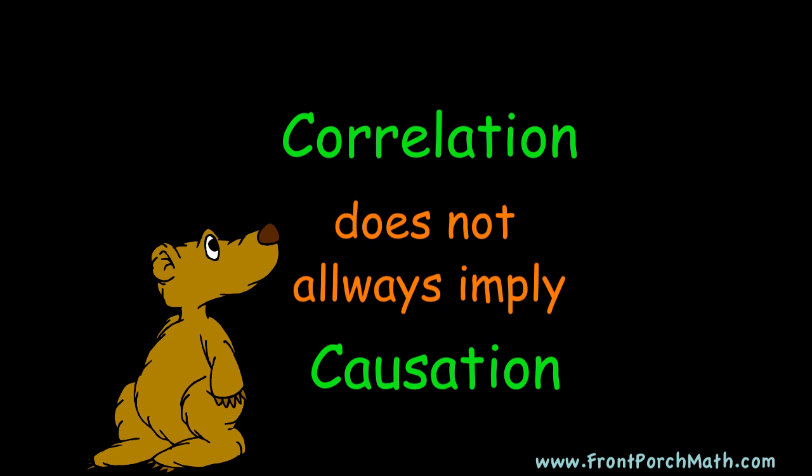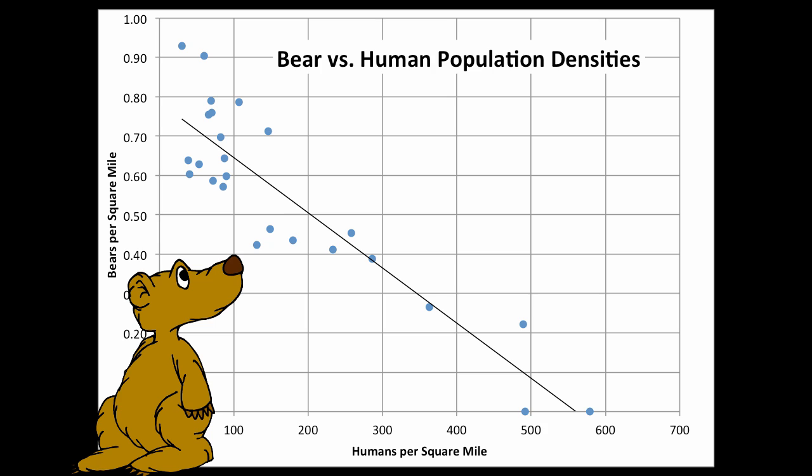Correlation does not always imply causation. In the lesson on linear models, we saw that bear populations tend to be lower in areas of higher human population.